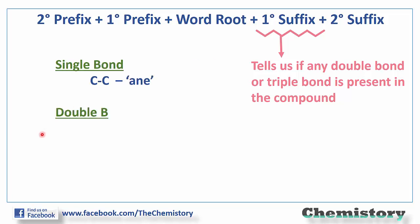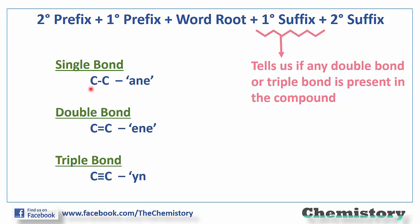That means it tells us how many double bonds or triple bonds are present in any organic compound. If all carbon-carbon bonds in the compound are single bonds, then the primary suffix will be 'ane'. But if there is a multiple bond between any two carbons, then the compound is unsaturated and we use primary suffix 'ene' or 'yne' depending upon whether the bond is a double bond or triple bond. Double bond → 'ene', triple bond → 'yne'. Let's look at some examples to understand primary suffixes.